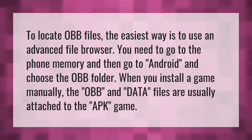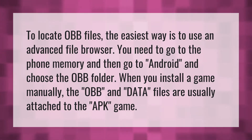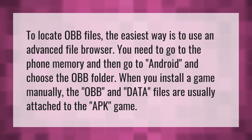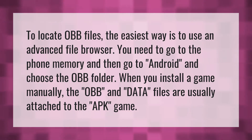To locate OBB files, the easiest way is to use an advanced file browser. You need to go to the phone memory, then go to Android, and choose the OBB folder. When you install a game manually, the OBB and data files are usually attached to the APK game.